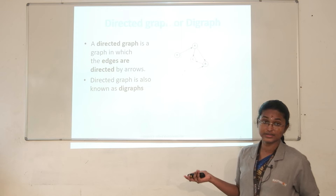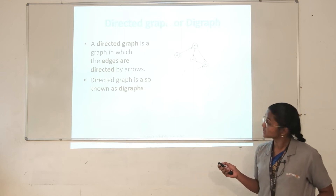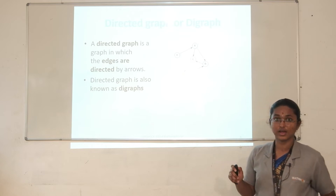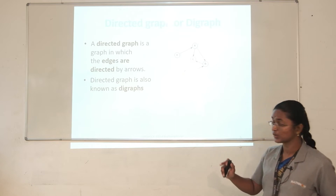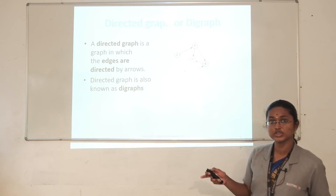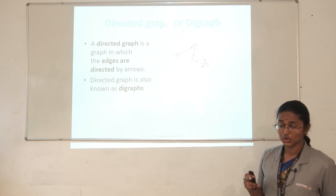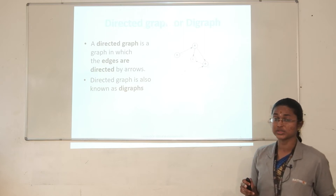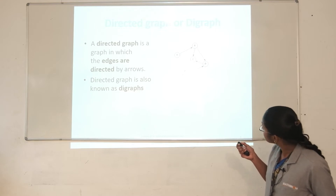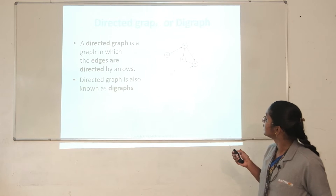Another type of graph is called a directed graph. A directed graph is one in which the direction between the edges is mentioned. In the previous case, G1, G2, G3 — all three graphs had no direction. But in a directed graph, there is an edge from A to B with an arrow pointing to B.